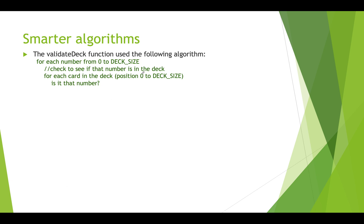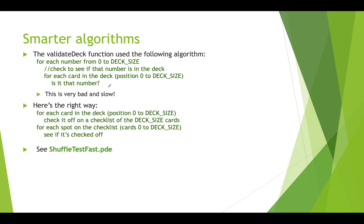There is a smarter way to do this. The validate deck function we just showed has nested for loops: for each number from zero up to deck size, we search through the entire deck to see if it's the number we're looking for. That's really inefficient — very slow. Here's a different approach: we create an array of booleans, and for each card in the deck, we use that card's number as an index into the boolean array and set it to true. Then we loop through the boolean array to make sure they're all true — checking that every card has been found. This is a faster way.